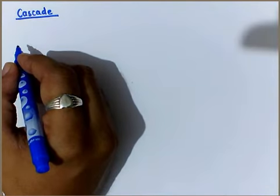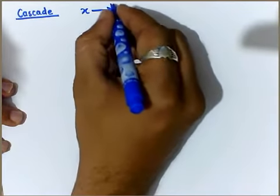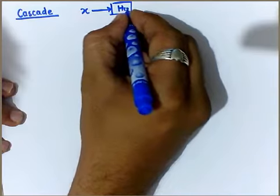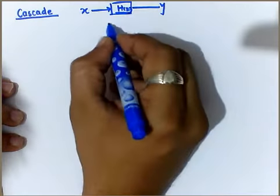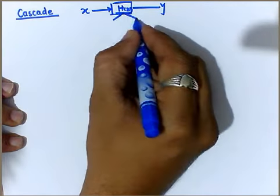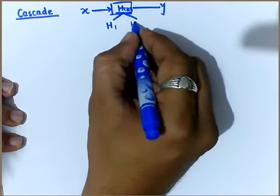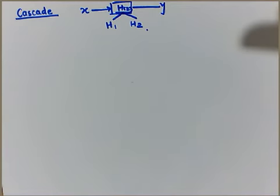It is quite simple. Let's say x of n is given as an input, this is h of z, and this is y of n. For h of z, we are writing it in terms of the cascade format, so it will be split into h1 and h2, and then we are splitting the entire equation in terms of that h1, h2.